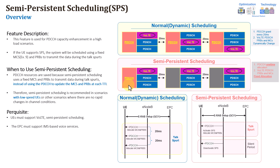In the beginning of the call, for example, it will allocate the PDCCH, and this PDCCH will have the grant. It will have information about the PDCCH resources or resource blocks and MCS as well — the modulation scheme. But in this case, it will be a fixed allocation. For example, it will have a fixed number of resource blocks with fixed location, and also fixed MCS — let's assume MCS 15 or 14 or whatever.